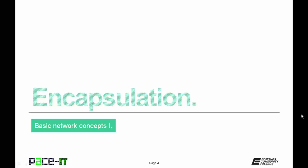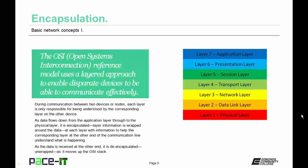We're going to begin by talking about encapsulation. The open systems interconnection reference model, or the OSI model, uses a layered approach to enable disparate devices to be able to communicate effectively. During the communication between two devices or nodes, each layer is only responsible for being understood by the corresponding layer on the other device. As data flows down from the application layer through to the physical layer, it is encapsulated at each layer with information to help the corresponding layer at the other end of the communication line understand what is happening. As the data is received at the other end, it is de-encapsulated, or unwrapped, as it moves up the OSI stack by the corresponding layer.